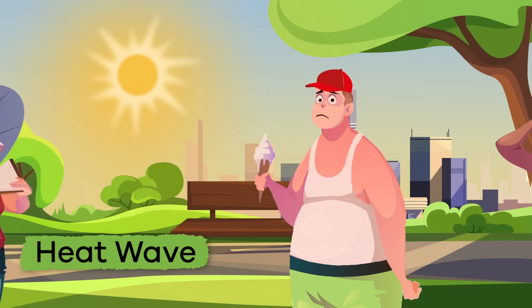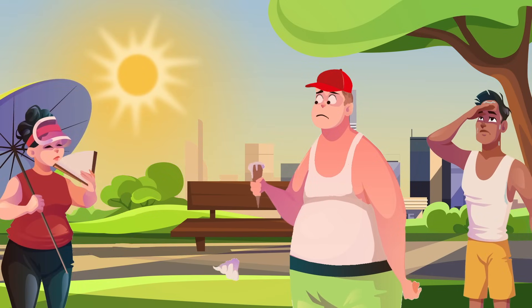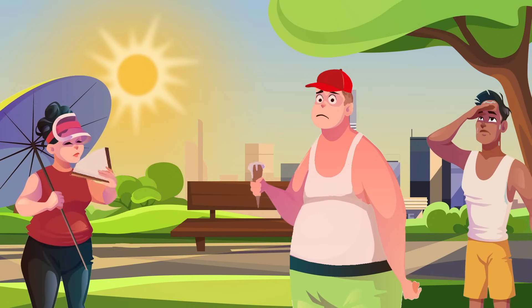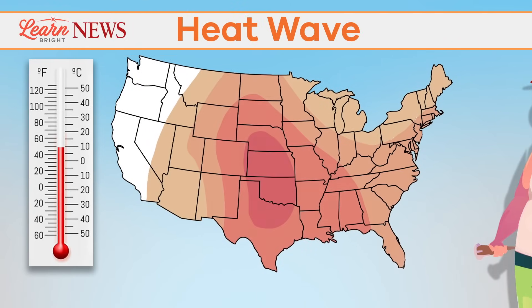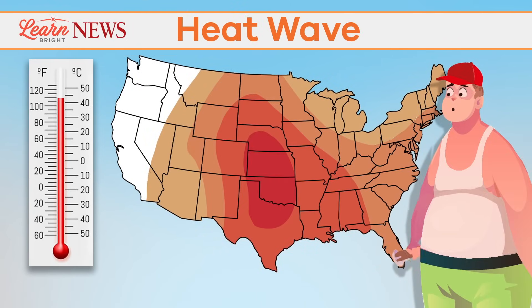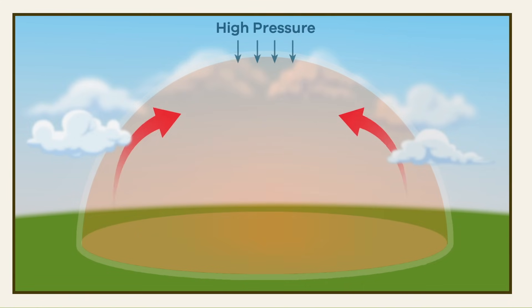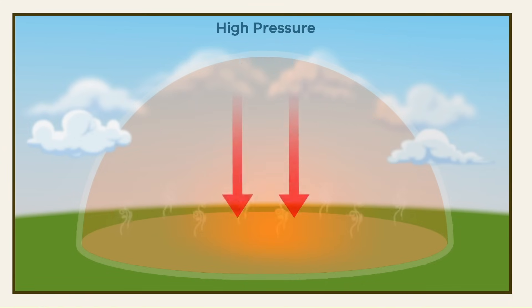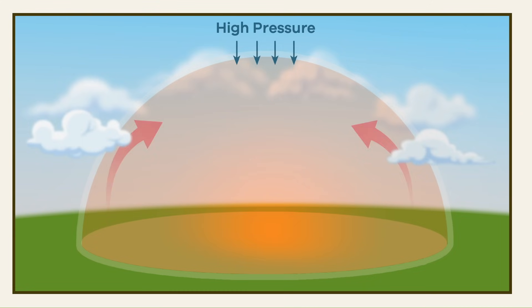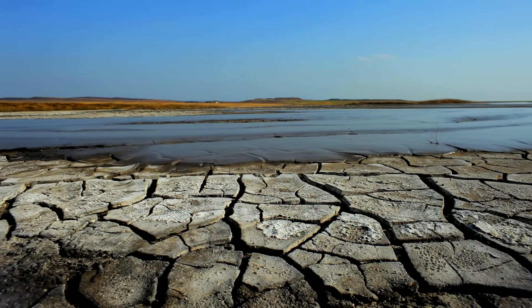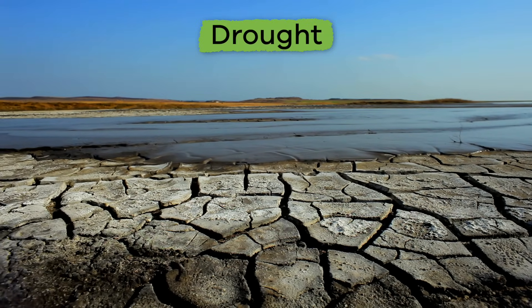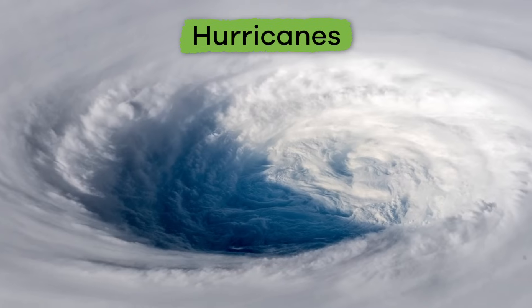Have you ever experienced a heat wave? A heat wave isn't your average hot summer day. Instead, it means that there are higher than normal temperatures in a region, which happens when high pressure in the Earth's atmosphere builds up and holds hot air on the Earth's surface. This decreases the chance of rain, which can lead to another natural disaster we have already discussed — drought.